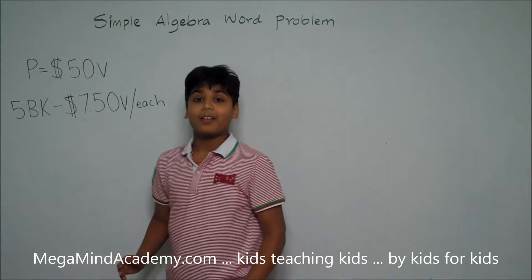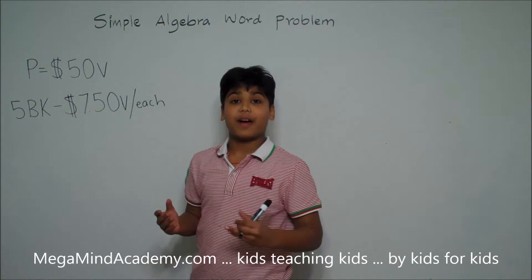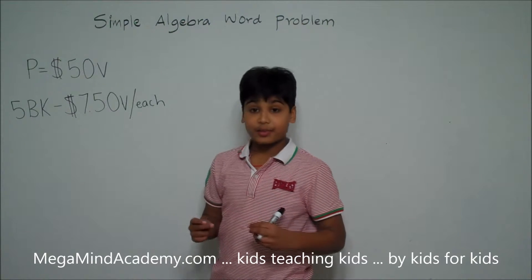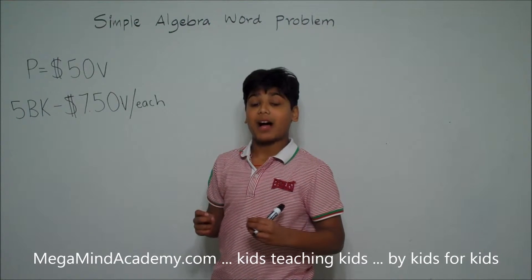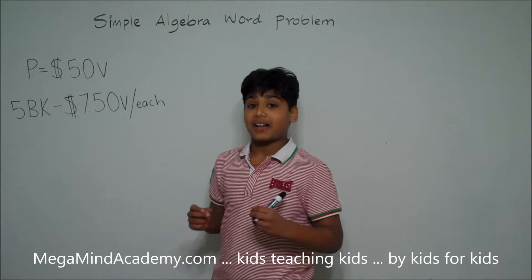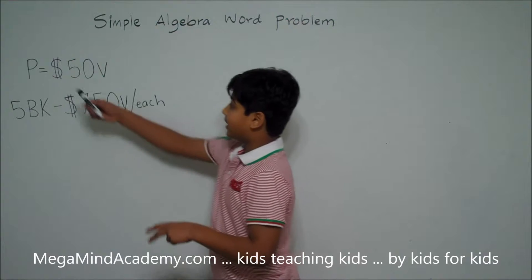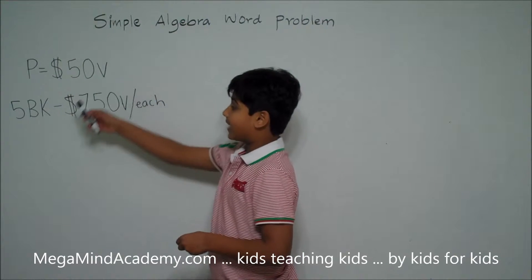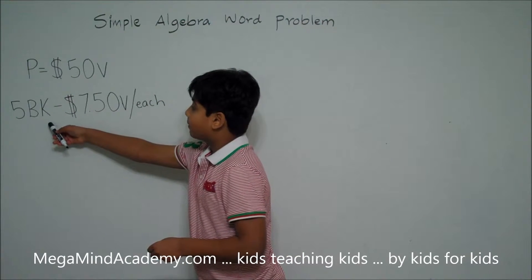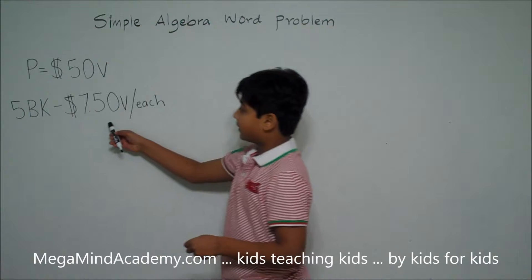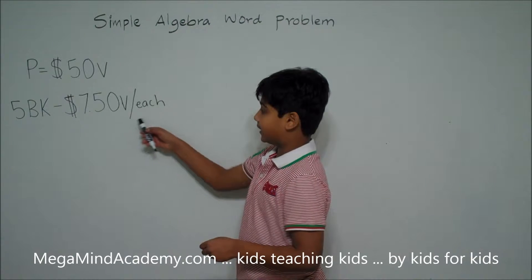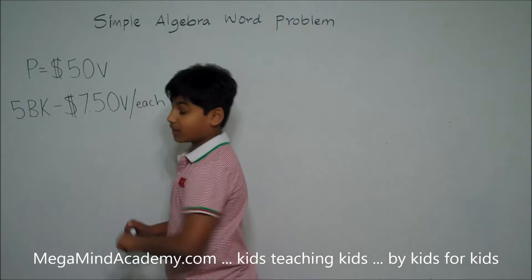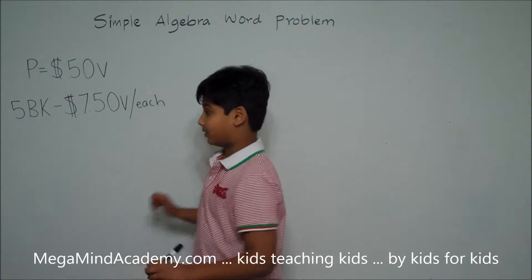Now, we have to find the amount of money left after he bought 5 books. We know Peter has 50 V, and he bought five books for seven and a half V dollars each. So let's write that down.